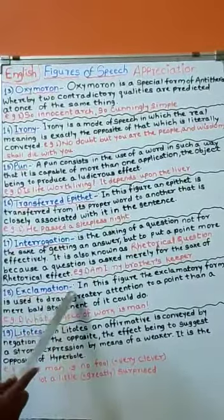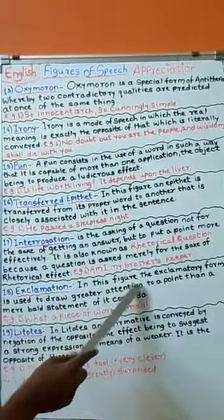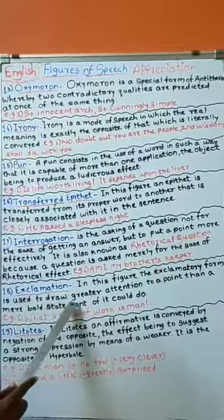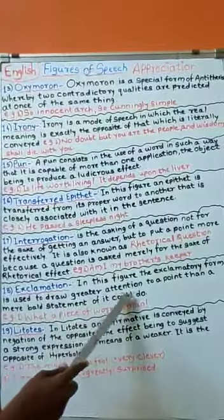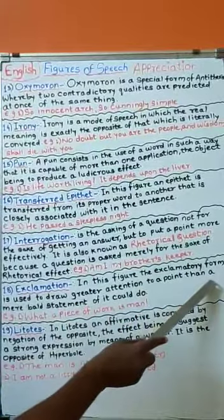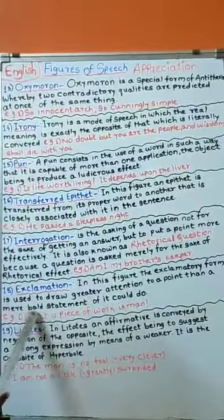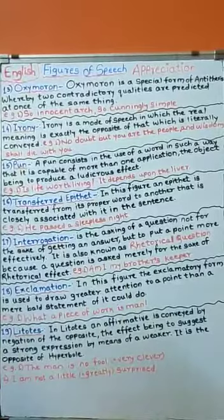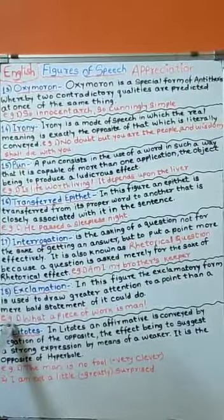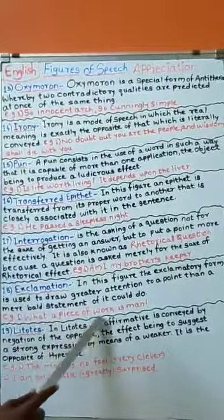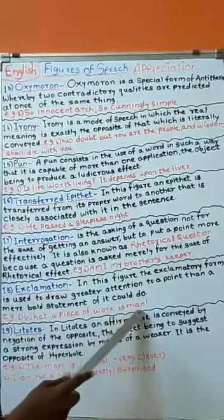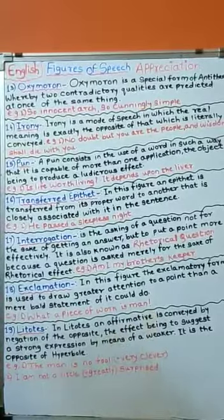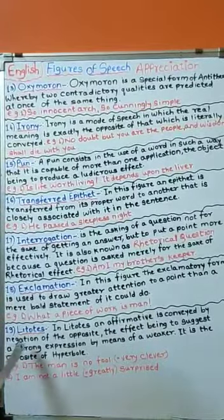In this figure of speech, the exclamatory form is used to draw greater attention to a point than a mere statement of it could do. For example, what a piece of work is man! Let's see next type.